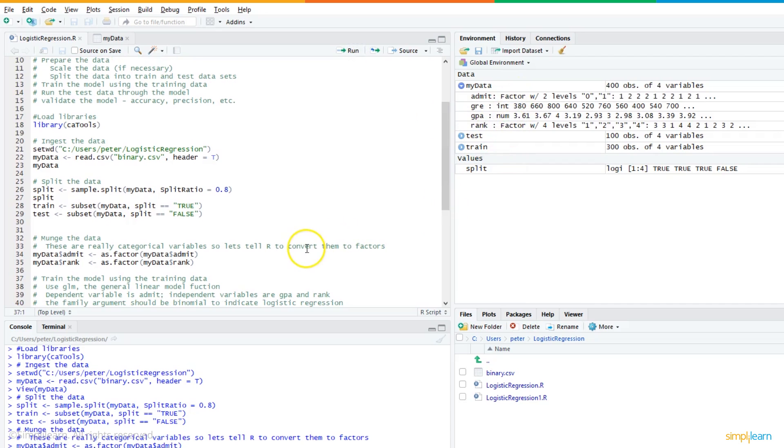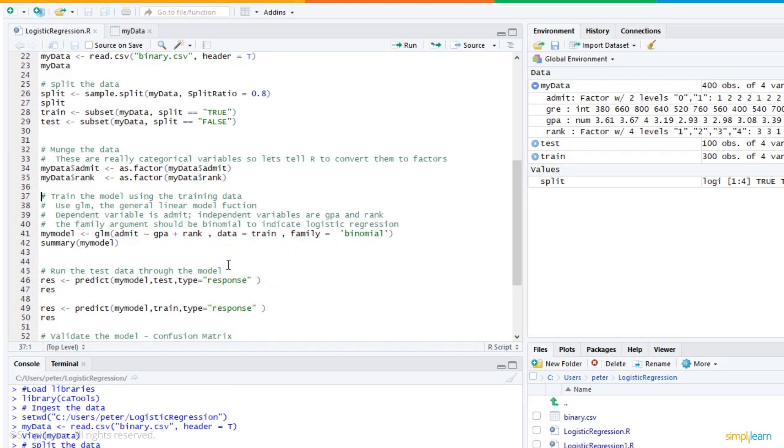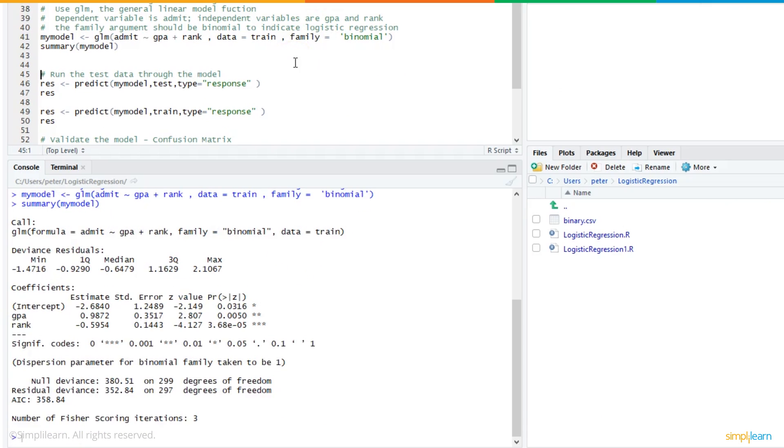And now the fun stuff. We're going to use the GLM function, the general linear model function, to train our logistic regression model. And the dependent variable is admit, and the independent variables are GPA and rank. And the little tilde sign here says the dependent variable will be a function of GPA and rank, the two independent variables. The data will be the training set, and the family will be binomial. And binomial indicates that it's a binary classifier. It's a logistic regression problem. There it is. We ran our model, and there's a summary of our model. You can see that there is some statistical significance in GPA and in rank by the coefficients and output of the model.